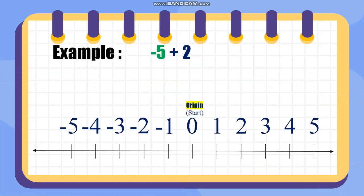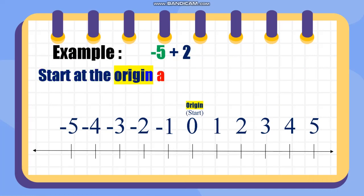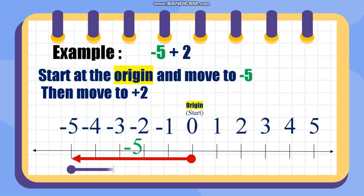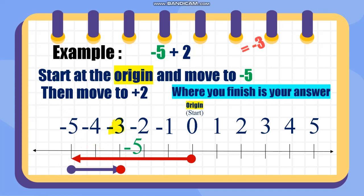For example, negative 5 plus 2. It starts at the origin; to move to negative 5, you go to the left. Then move positive 2, going to the right. So you end here, which means your answer is negative 3.